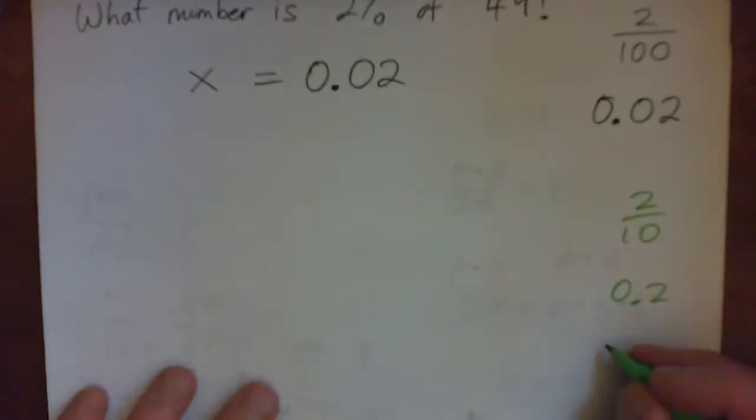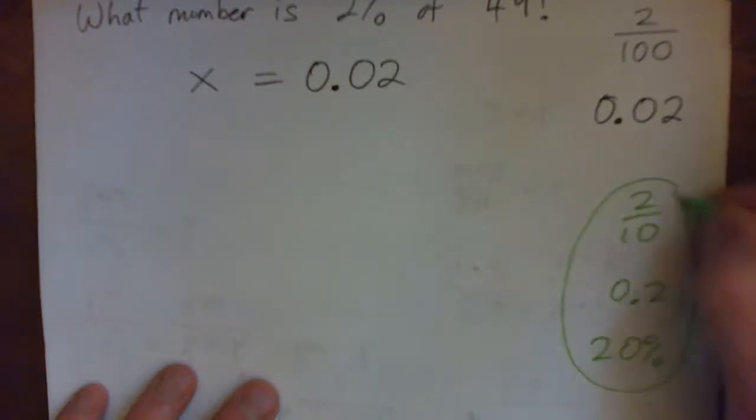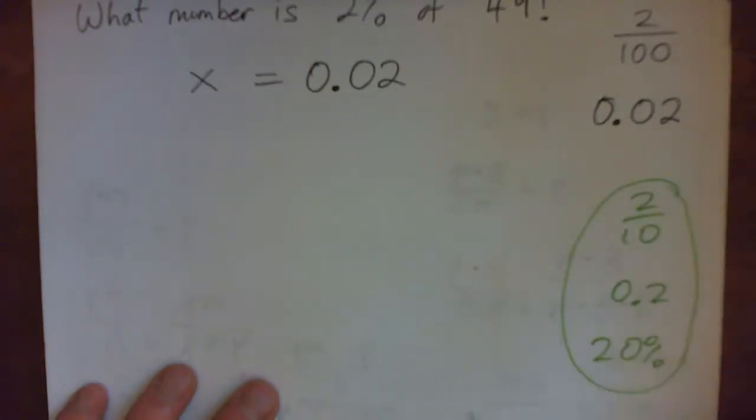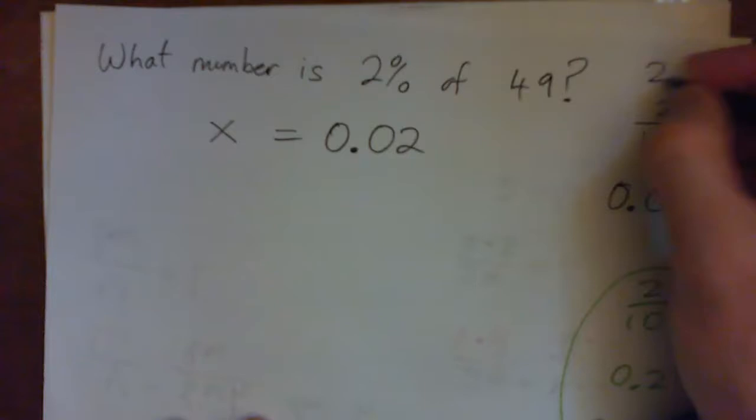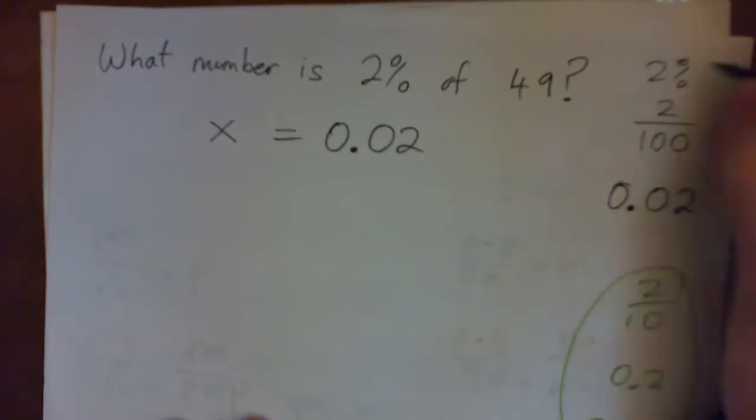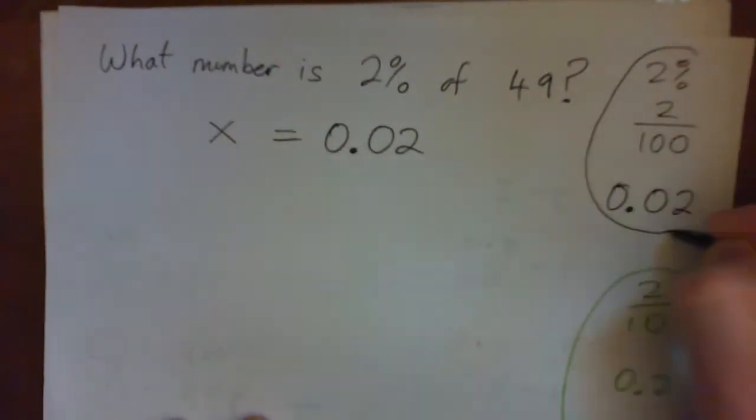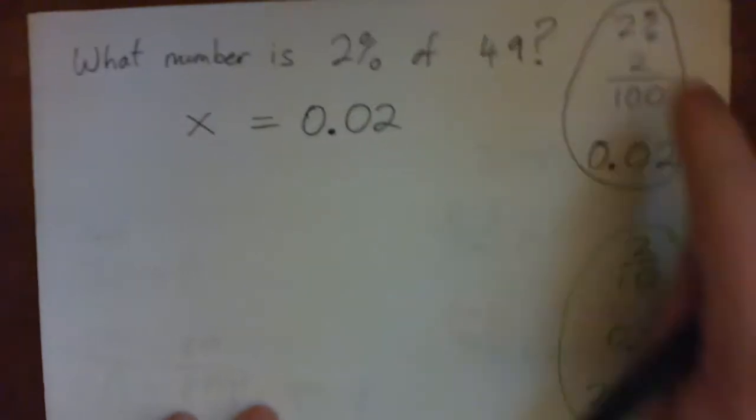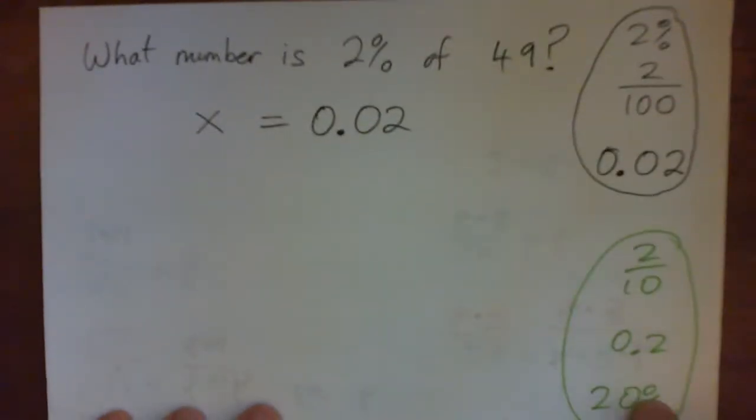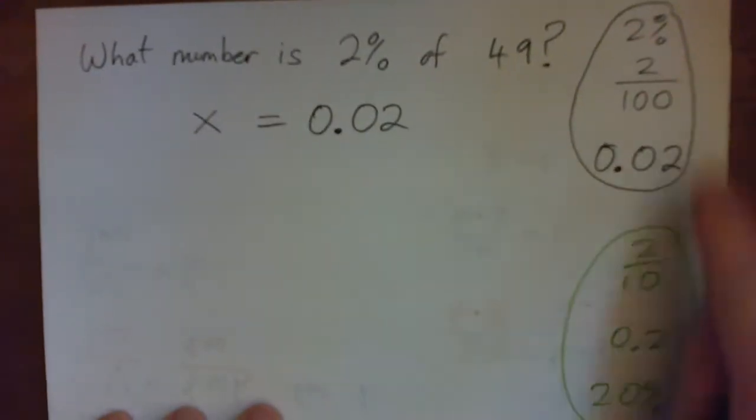Two-tenths, zero point two, that's actually twenty percent. Two percent is two hundredths, 0.02. These things are equal. So don't confuse 20% with 2%, completely different.